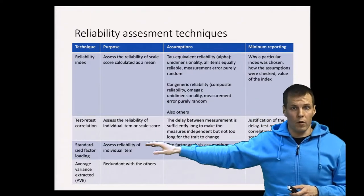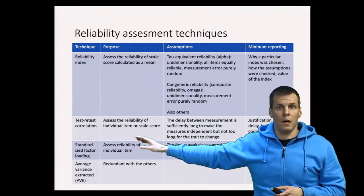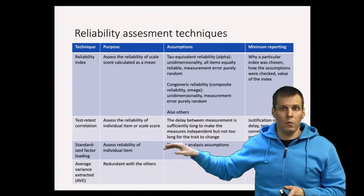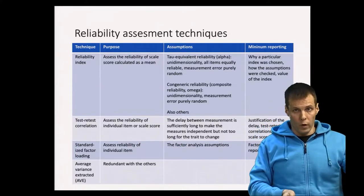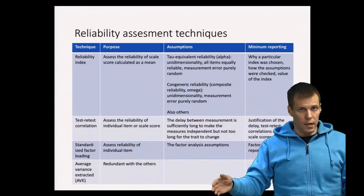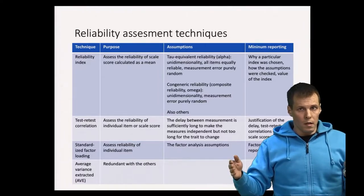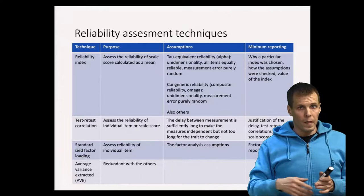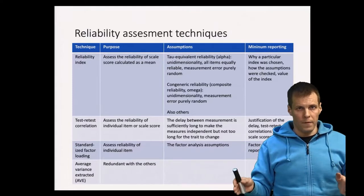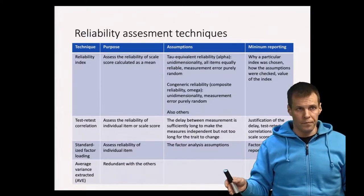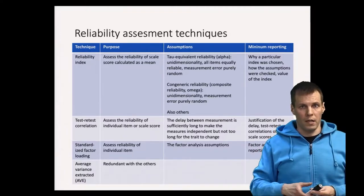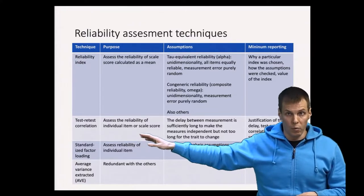Test-retest correlation can be used to assess the reliability of individual measures or scale scores. The idea is that you measure something now and then measure the same thing a week later — if the two measures correlate, that is an indication of reliability. This technique has two assumptions: the delay between measures must be sufficiently long so that the respondent does not remember their previous answer, and the delay must not be so long that the trait being measured has changed.